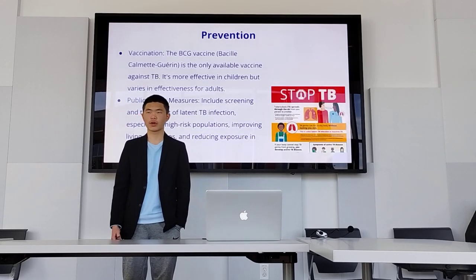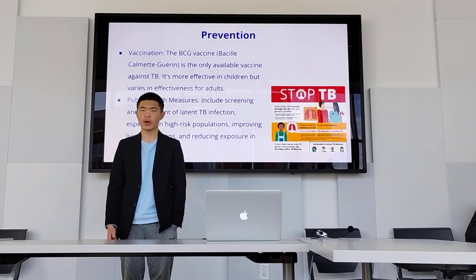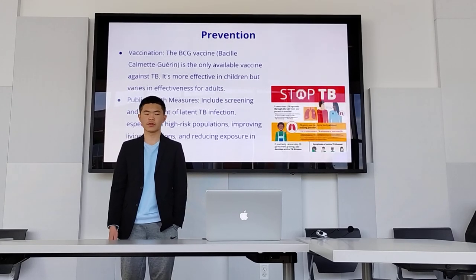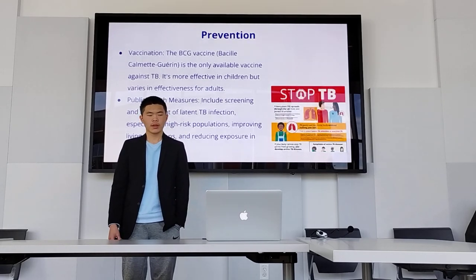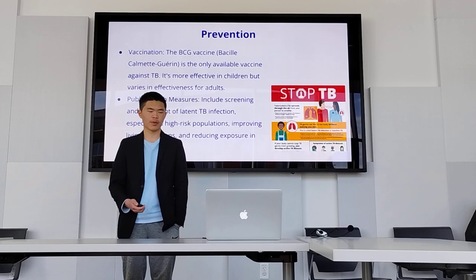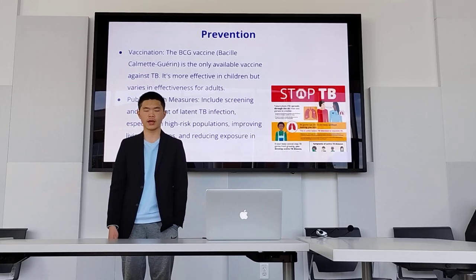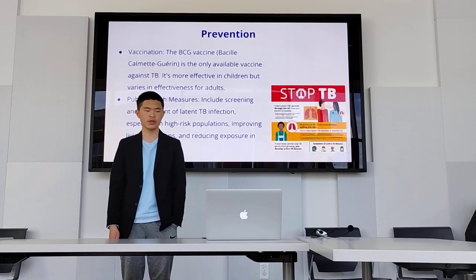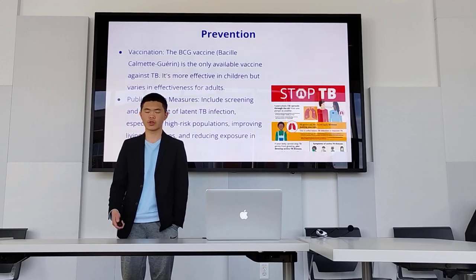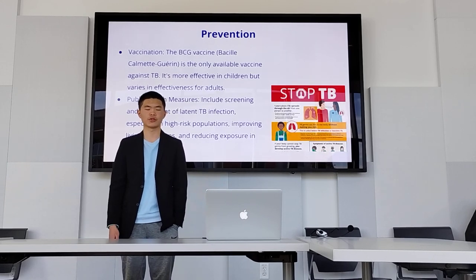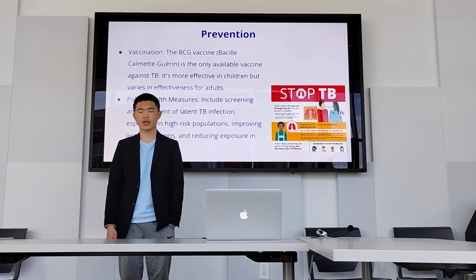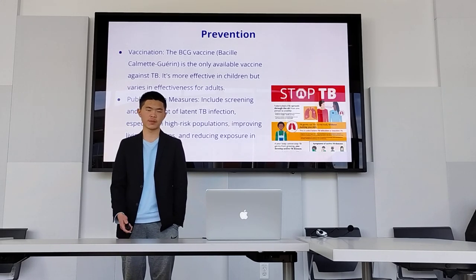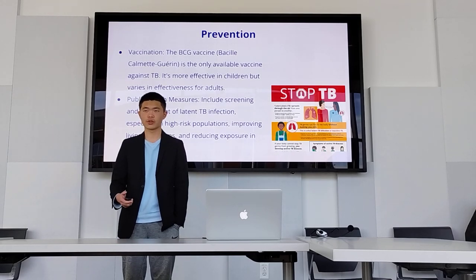To prevent TB, we've been working on vaccinations. Currently, only the BCG vaccine is approved, and it's effective in children, though there is limited effectiveness for adults. We should also improve public health measures such as screening and treatment of latent TB infection, especially in high-risk populations, and improve living conditions and reduce exposure in high-risk settings. If you think you're at risk of exposure to TB, you should wear respirators, which are used in cases of airborne transmission.